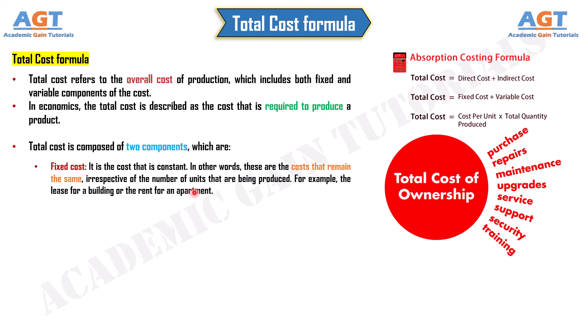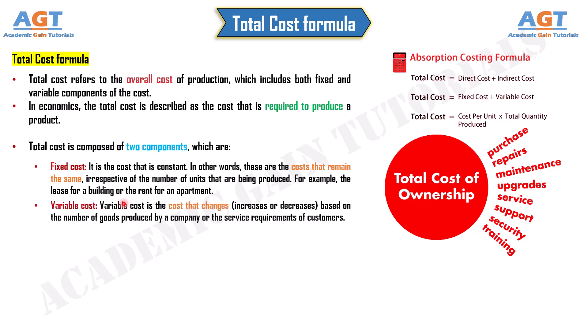Number 2: Variable cost. Variable cost is the cost that changes — increases or decreases — based on the number of goods produced by a company or the service requirements of customers.